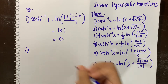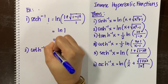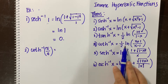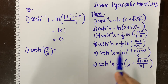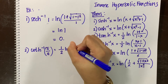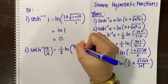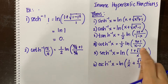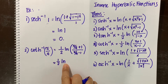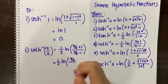Let's consider another example: the inverse hyperbolic cotangent of 5 over 4. We evaluate this using theorem 4, that is, the inverse hyperbolic cotangent of x equals one-half of ln of x plus 1 all over x minus 1. With x equal to 5 over 4, we have one-half of ln of the quantity 5/4 plus 1 all over 5/4 minus 1. Simplifying: 5/4 plus 1 gives 9/4, and 5/4 minus 1 gives 1/4.